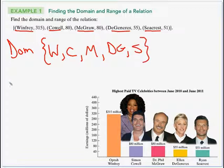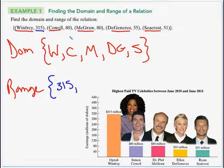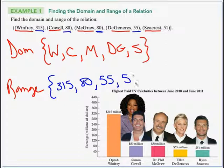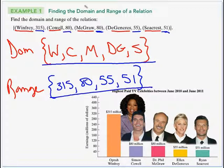The range is all the second components — the salary numbers: 315, 80, 55, and 51. Notice that 80 appears twice for both Cowell and McGraw, but we only need to write it once in the range set. So the domain is all the names, and the range is all the numbers.